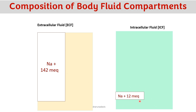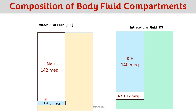Potassium is present in ECF at around 5 milliequivalents, whereas it is the major cation of intracellular fluid at around 140 milliequivalents. Calcium in ECF is around 2.4 milliequivalents, while in intracellular fluid it is almost negligible — around 0.0001 milliequivalents.